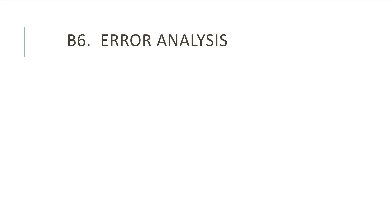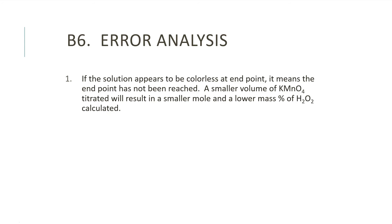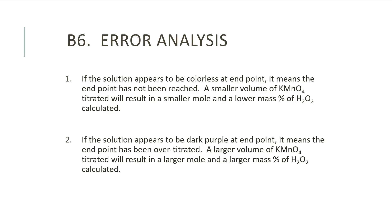B6: Error Analysis. Some errors that could have occurred include: 1. If the solution appears colorless at the endpoint, it means the endpoint has not been reached. A smaller volume of potassium permanganate titrated will result in a smaller mole count and a lower mass percent of hydrogen peroxide calculated. 2. If the solution appears dark purple at the endpoint, it means the endpoint has been over-titrated. A larger volume of potassium permanganate titrated will result in a larger mole count and a larger mass percent of hydrogen peroxide calculated.